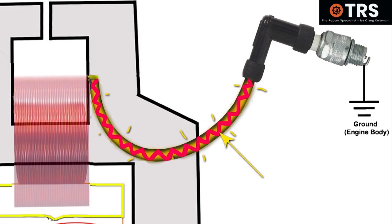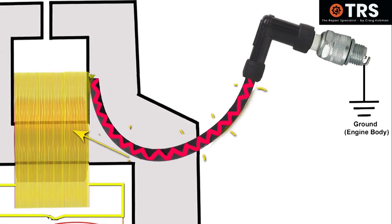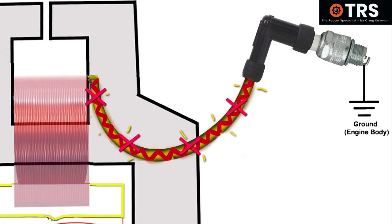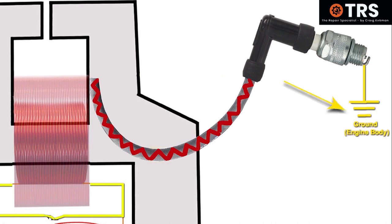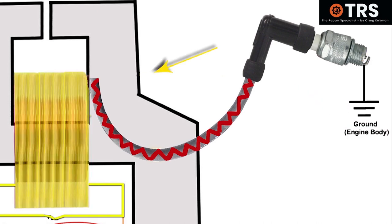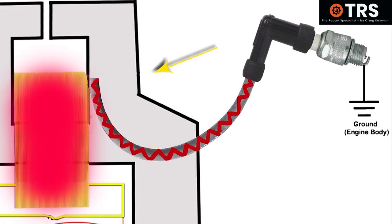So if one is fitted to this coil, let's say, and the resistance through the lead is too high, the electrical current is made in the coil and it's finding it difficult to go through the HT lead to the spark plug and to the engine body, and that produces a lot of heat and potentially heat damage.